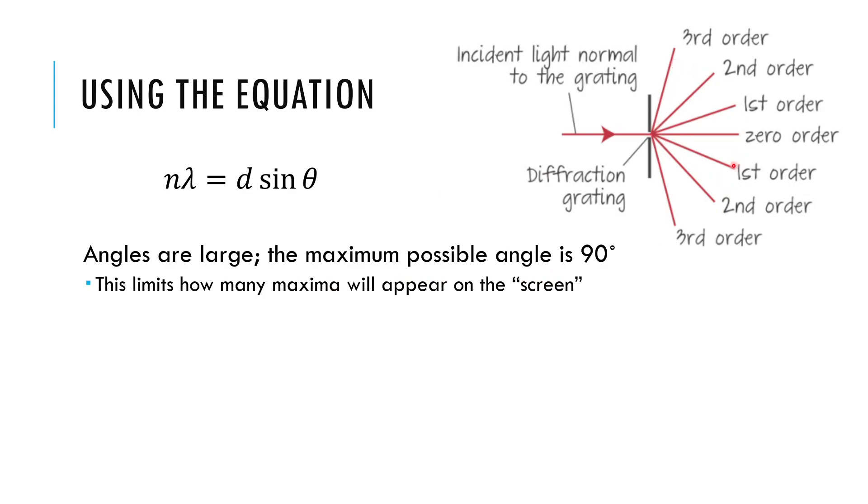And so they like to ask that question, how many will you see? In this case, it would be one, two, three, four, five, six, seven bright spots you would see on the screen. Alright. So a maximum possible angle of diffraction is 90 degrees is a good tip to remember.